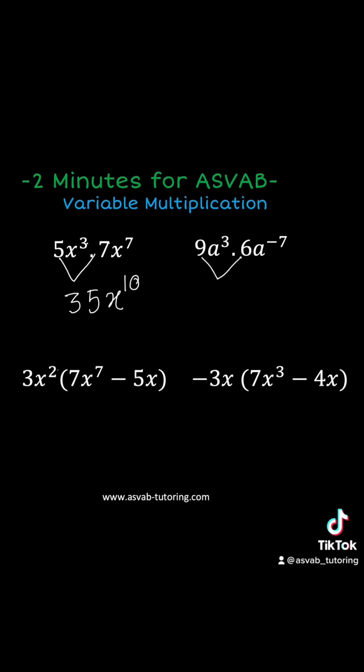Same way, 9 times 6 is 50, 4, 8 to the power negative 7 plus 3, that gives you negative 4.